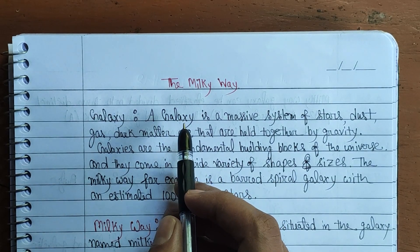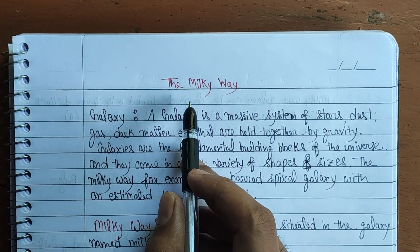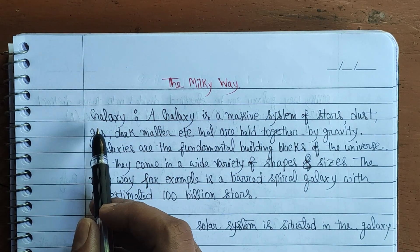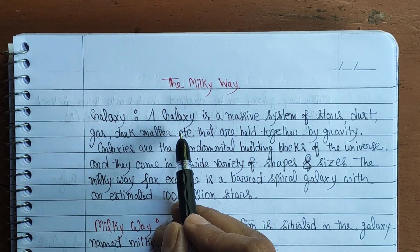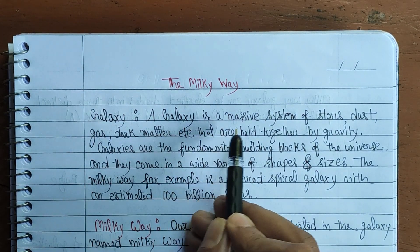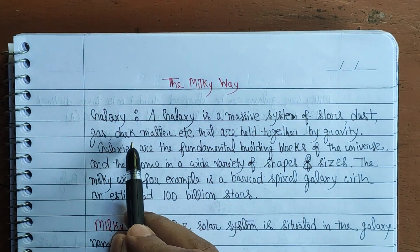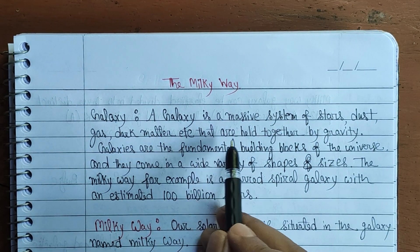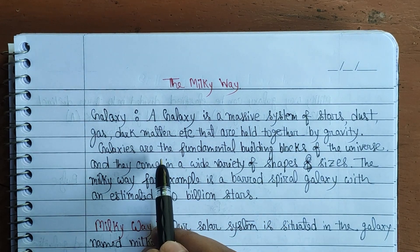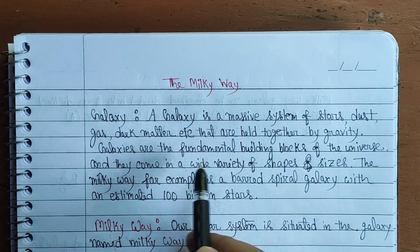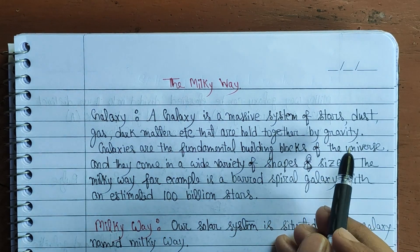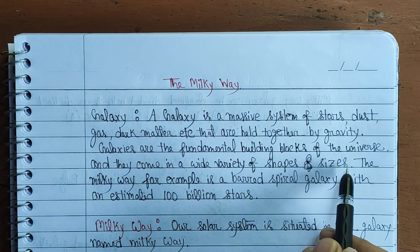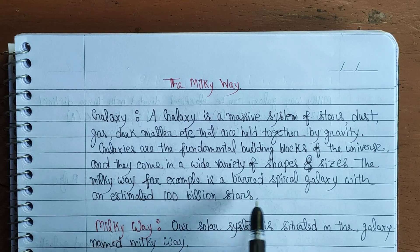Hello guys, welcome to our YouTube channel. In this video we are going to learn about the Milky Way galaxy. First of all, let's see what a galaxy means. A galaxy is a massive system of stars, dust, gas, dark matter, and other things that are all held together by gravity. Galaxies are the fundamental building blocks of the universe and they come in a wide variety of shapes and sizes.